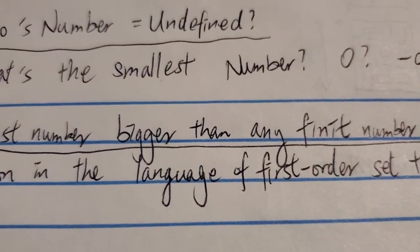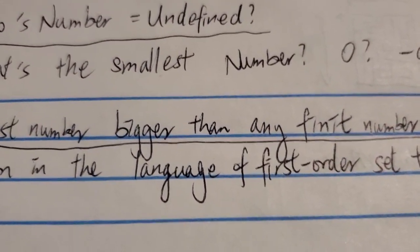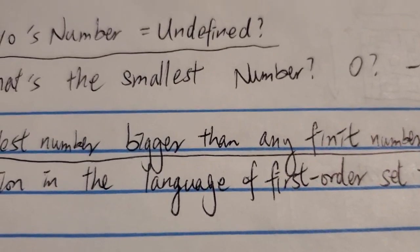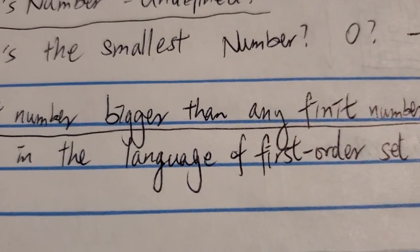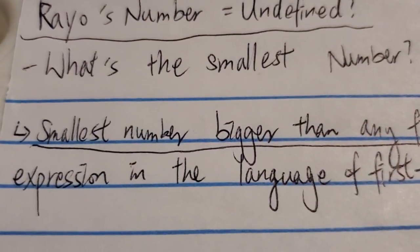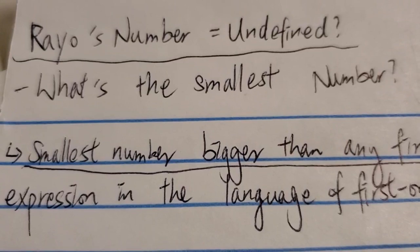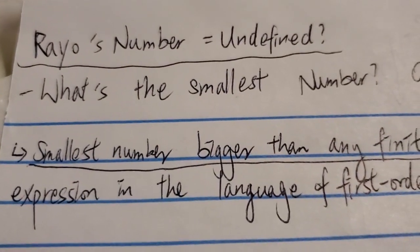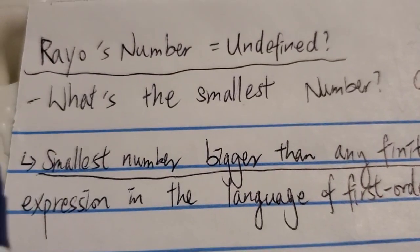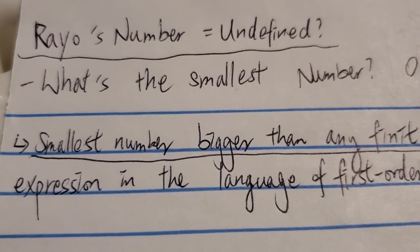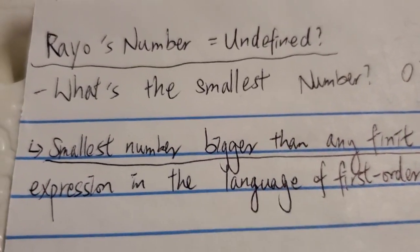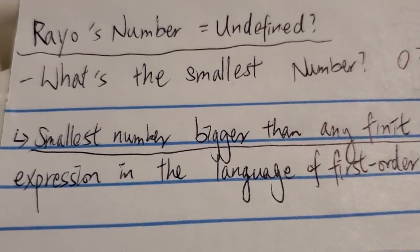Of course, if you define it as whole numbers or integers, that would be easy. The smallest whole number bigger than zero is one; the smallest whole number bigger than one is two. But if you don't specify that — if you just say 'smallest number' — it's undefined because there are infinite numbers between any two numbers. So is Rayo's number undefined? Any number defined this way may be undefined unless you change it to 'smallest whole number.'